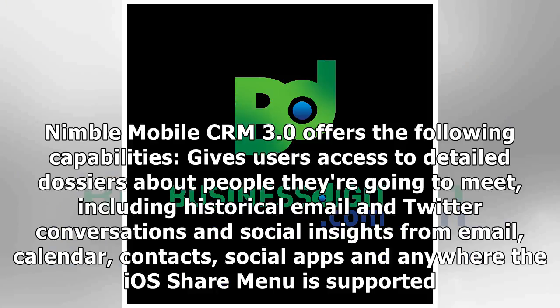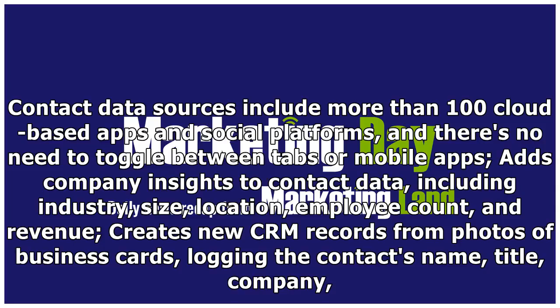Nimble Mobile CRM 3.0 gives users access to detailed dossiers about people they're going to meet, including historical email and Twitter conversations and social insights from email, calendar contacts, social apps, and anywhere the iOS share menu is supported. Contact data sources include more than 100 cloud-based apps and social platforms, with no need to toggle between tabs or mobile apps. It also adds company insights to contact data, including industry, size, location, employee count, and revenue.